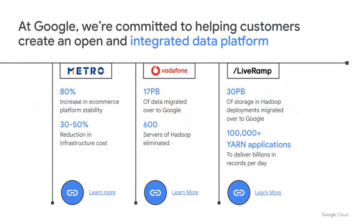Instead, they are looking for ways to integrate open source analytics and processing into the core of their data platform. At Google Cloud, we have long focused on enabling customers to modernize their open source deployments with Cloud Dataproc, our managed open source offering. Customers like Metro, Vodafone, and LiveRamp are using Cloud Dataproc to modernize their data analytics infrastructure, simplify their operations, lower support cost and infrastructure costs, and greatly improve the robustness of their data analytics ecosystem.